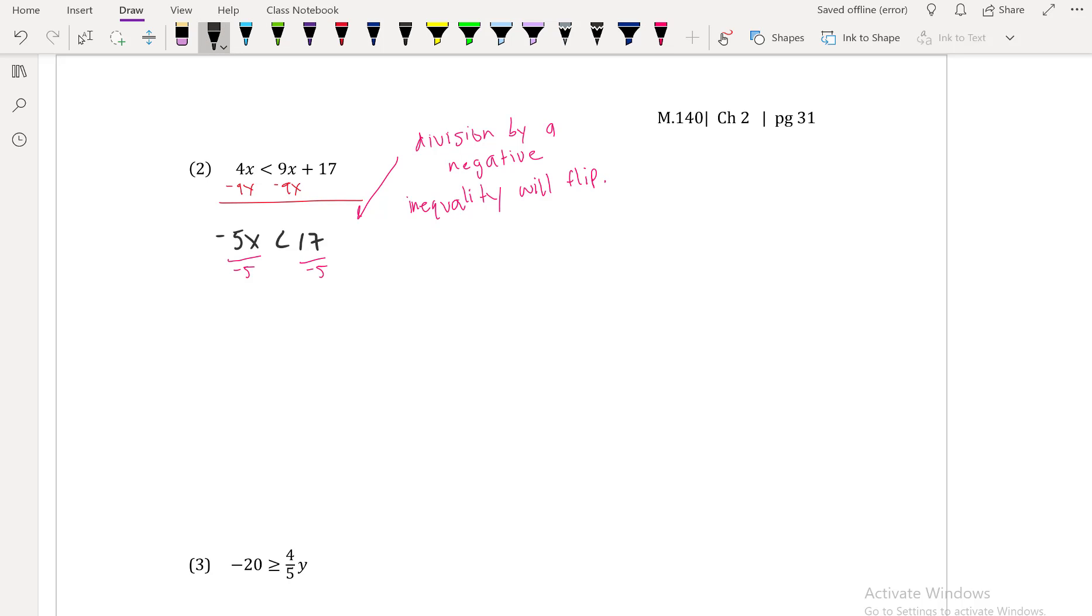So now what you have, the negative 5x, the negative 5 cancel. So you have your x here and you have your 17 over a negative 5. And remember, you divide it by a negative, so that inequality switches direction. So now you have x is greater than a negative 17 fifths. So my answer is that x is greater than a negative 17 over 5.